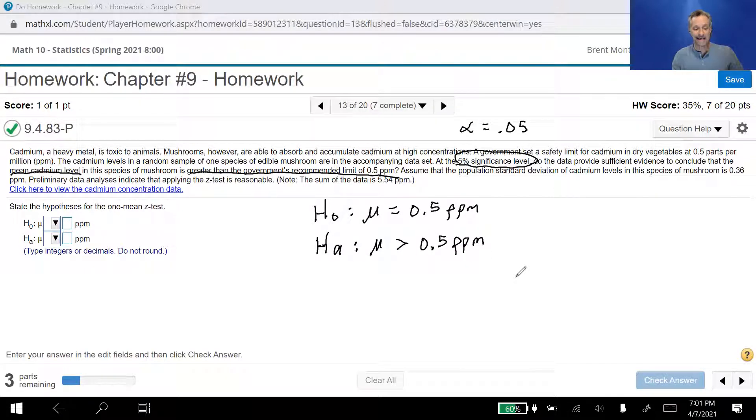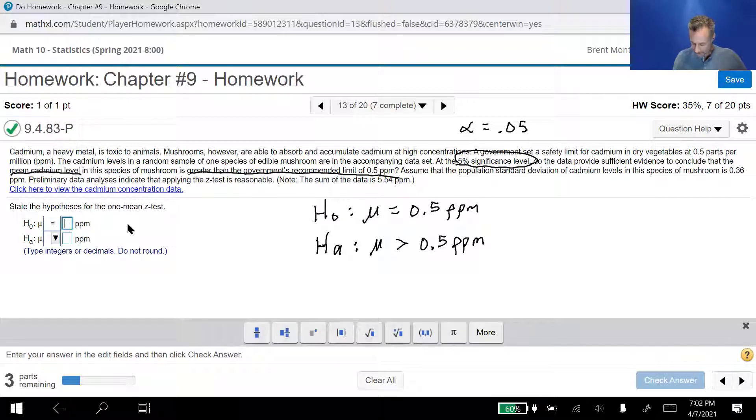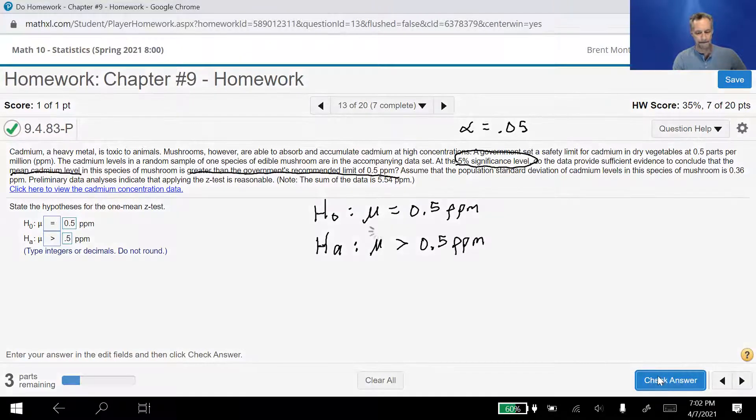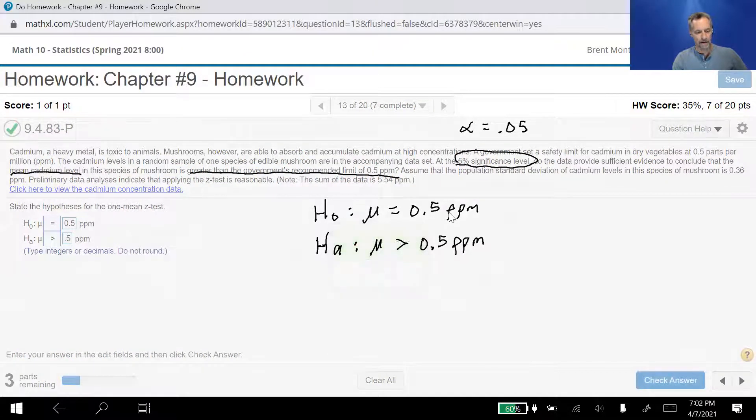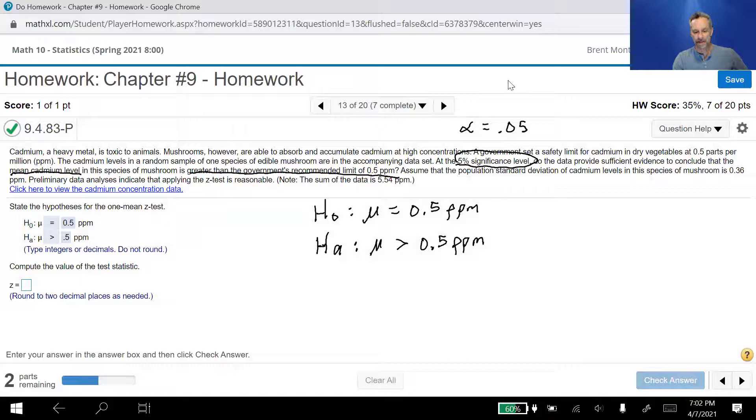So let's just go ahead and get that entered in to get it started. So we've got mu equals. Remember, the null hypothesis always includes an equal sign. The alternative will have a not equal or a greater than or less than. In this case, obviously, it's the greater than. And notice you can put this in as 0.5 or you can just put it as 0.5. It doesn't matter. We'll go ahead and check that. Alright, so we're good there. Let's go ahead and erase this.